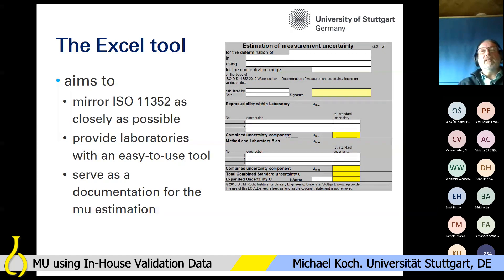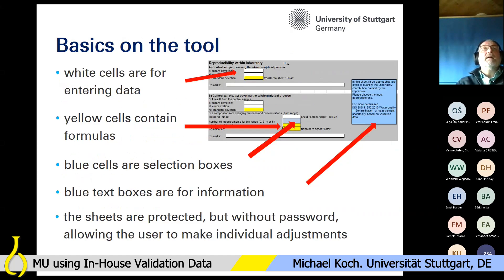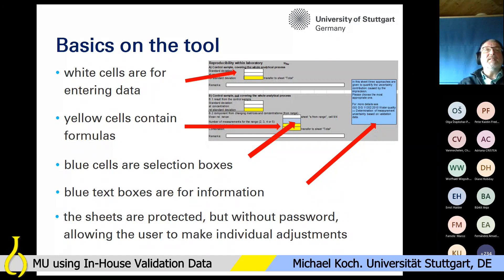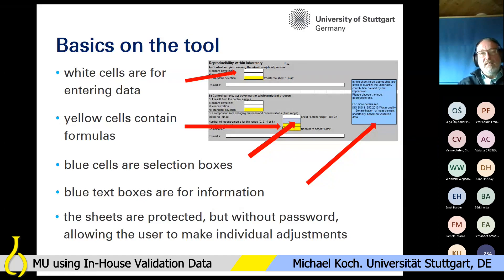Then everything is available when the audit starts. Regarding the basics of the tool: it's based on Excel. We have white cells where you can enter data, yellow cells that contain all the formulas, and blue cells which are selection boxes where you can select a value. The blue text boxes give some additional information.